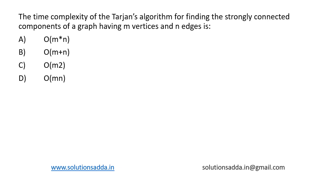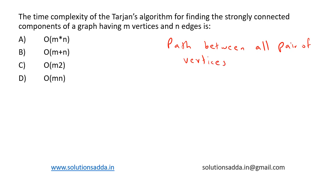A directed graph is said to be strongly connected if there is a path between all pairs of vertices. This is a strongly connected graph.